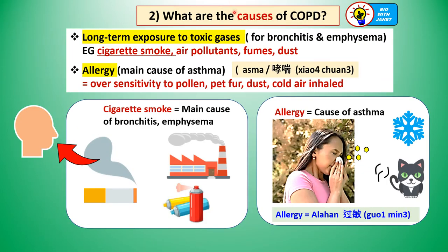What are the general causes of COPD? There are two main causes. The first is long-term exposure to toxic gases, such as cigarette smoke — especially for heavy smokers — air pollutants, fumes, and dust. Long-term exposure to cigarette smoke can cause chronic bronchitis and emphysema.